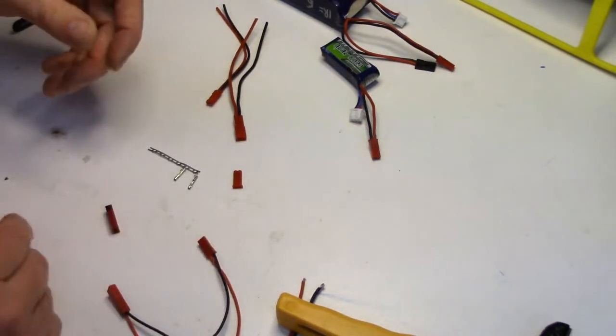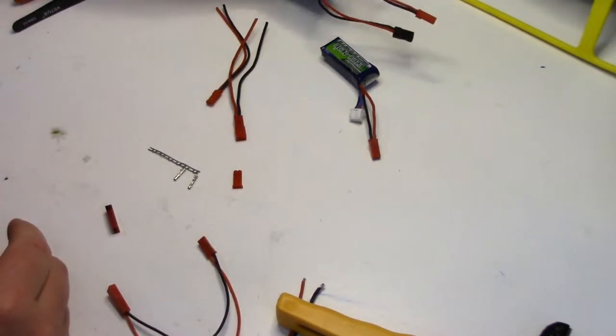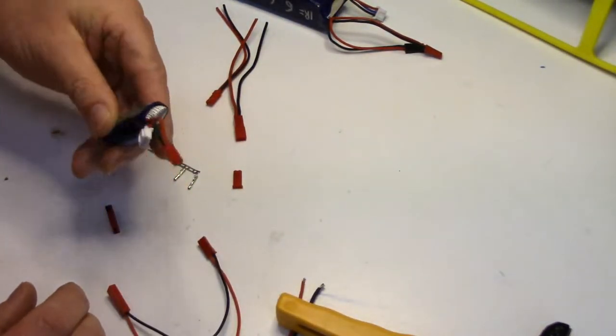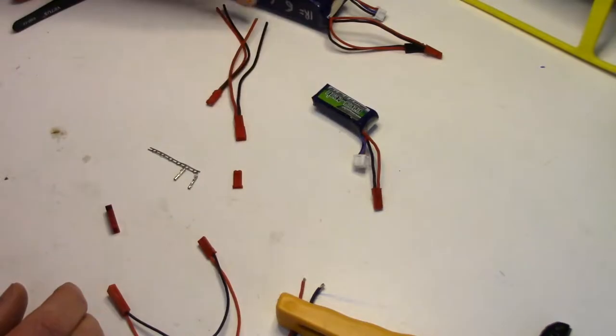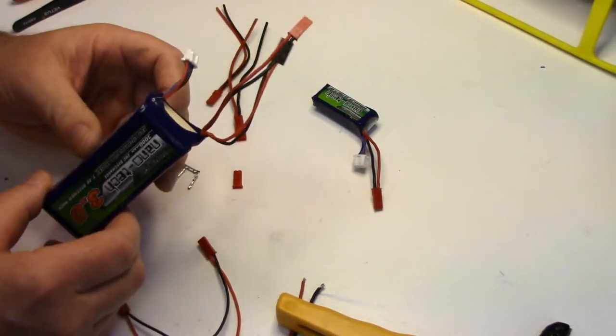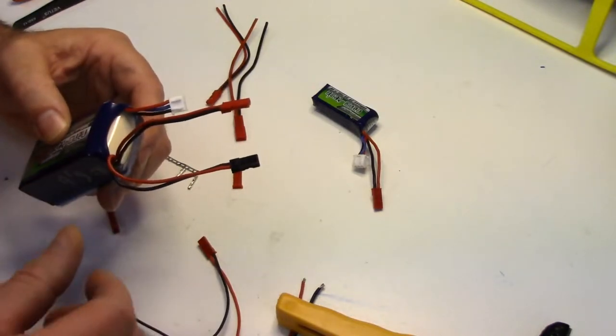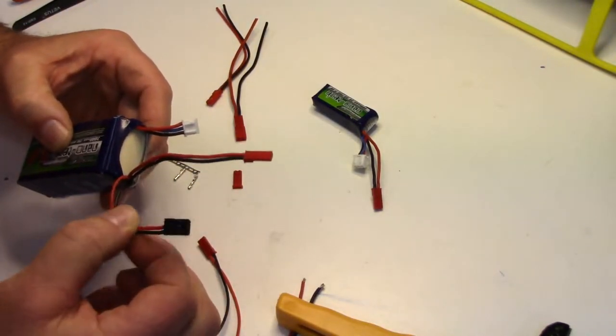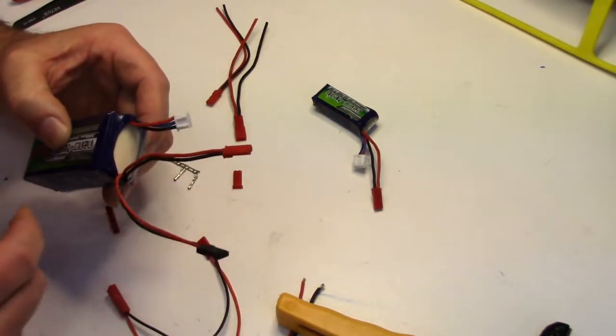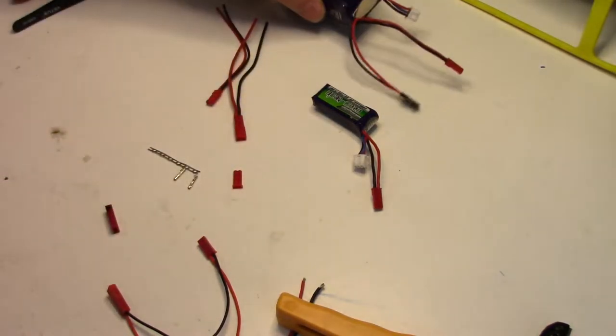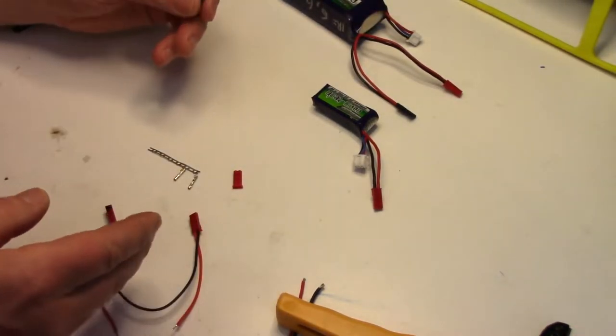You'll see them on little Park Flyer lipo batteries. I run a lot of RX batteries, dedicated RX batteries on my larger helicopters, and they'll often come with not only a servo power plug but a JST as well. I'll always use the JST if possible over the servo plug. Really like these plugs.